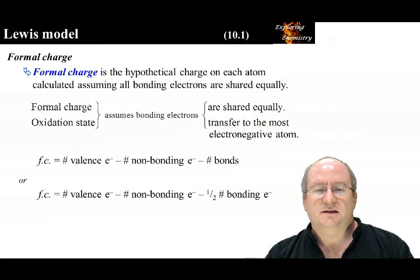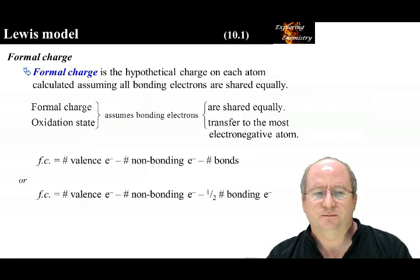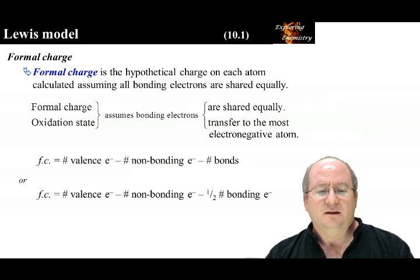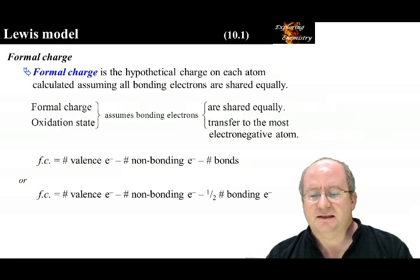We have already discussed oxidation state, which assumes the bonding electrons are transferred to the most electronegative atom. Formal charge is a calculation that assumes the bonding electrons are shared equally between atoms. The calculation of formal charge is shown here. Number of valence electrons minus the number of non-bonding electrons minus the number of bonds.